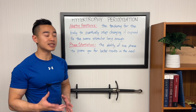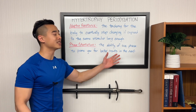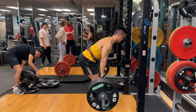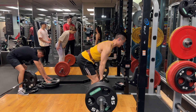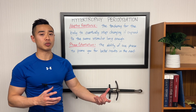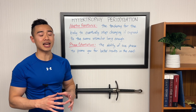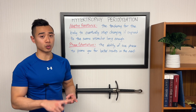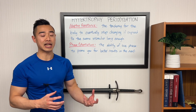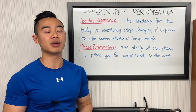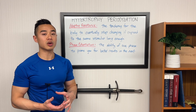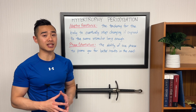The next concept is phase potentiation — this is the ability of one phase to prime you for better results in the next. One example that will apply to our hypertrophy periodization talk is the idea that building strength can prime you for better hypertrophy training later on. If you spend time building strength you will increase the amount of weight you're able to lift for each rep. Thus for your training in later blocks you'll be able to perform more effective volume for every set, particularly if you look at volume from the perspective of sets times reps times weight lifted. From a mechanistic standpoint, if you increase your strength you'll be able to produce more mechanical tension in later blocks. This will have impact in our planning when we think about ordering our phases, particularly if you wanted to use a block-style periodization. Starting with a strength block could potentially prime you for better hypertrophy in later blocks.